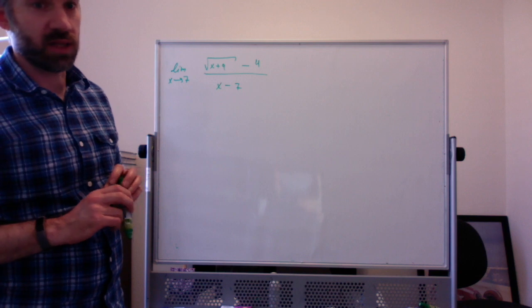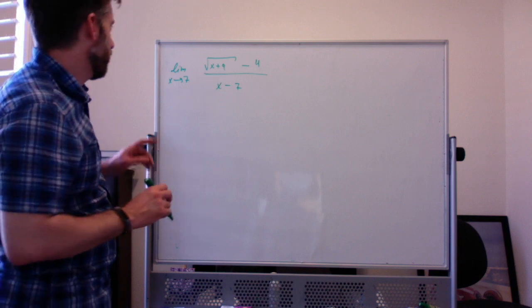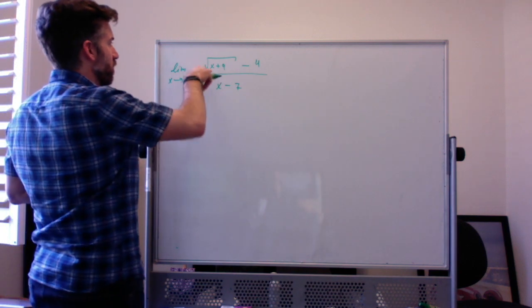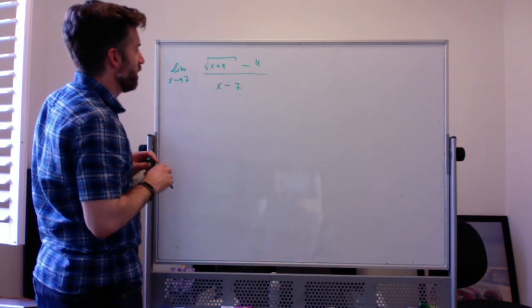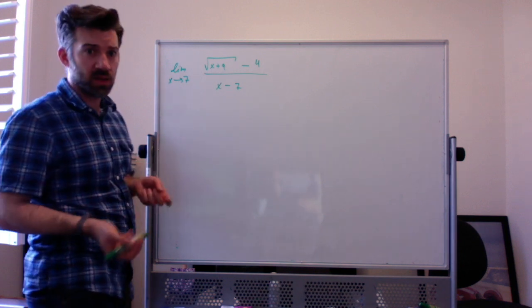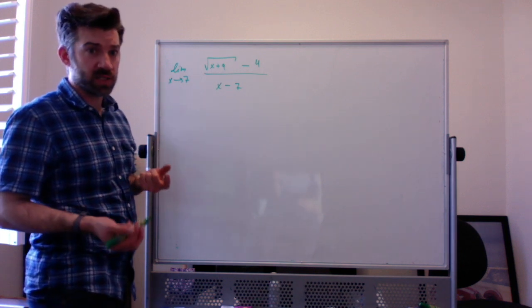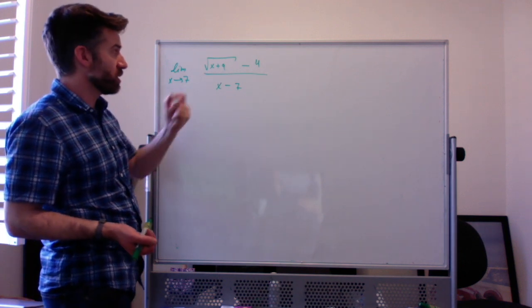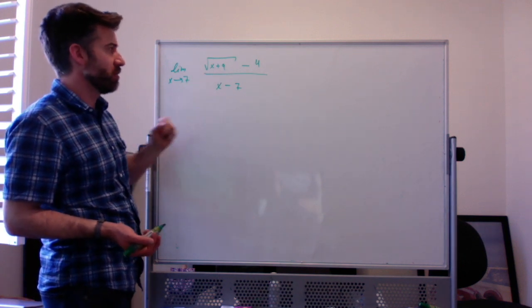We're using conjugates to find limits. We have the limit as x approaches 7 of the square root of x plus 9, minus 4, over x minus 7. This is clearly a 0 over 0 type of limit — if you plug in 7 for x, you get 0 on top and 0 on the bottom.